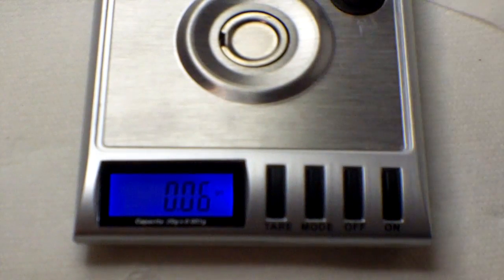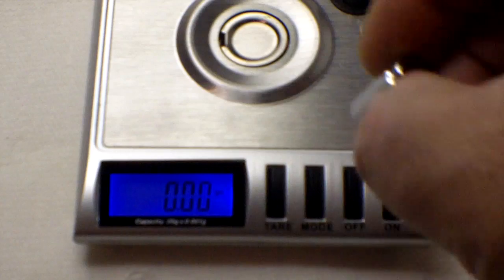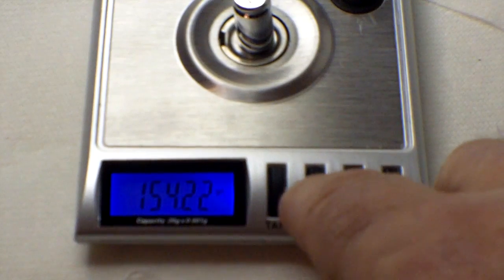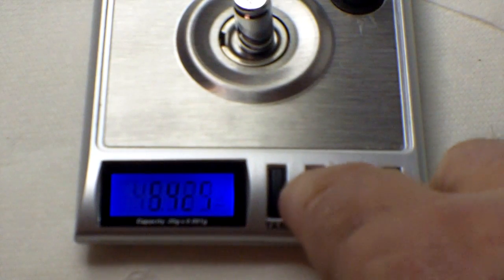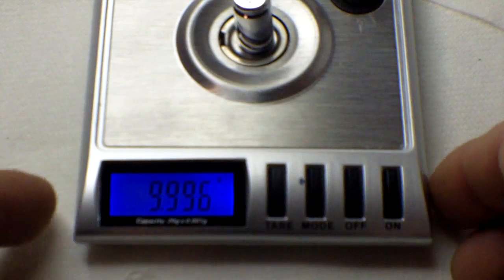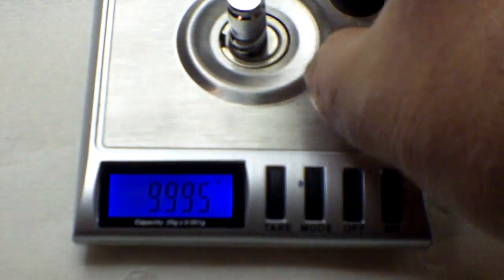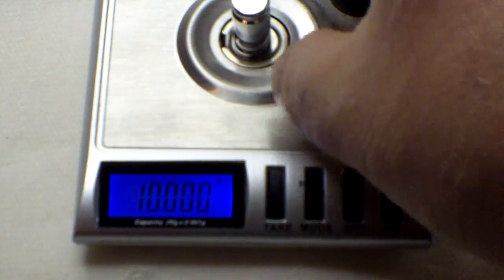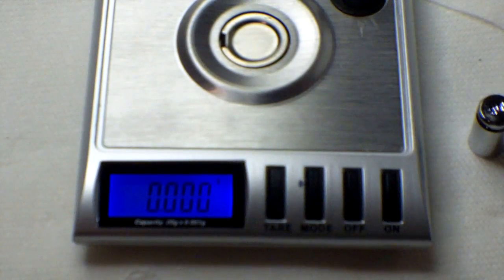Put this one back. Okay, so now it should be ready to weigh something. If I take a 10 gram weight and put it on here, it'll weigh 154.2 grains. Or if we switch the mode, 9.996 grams. It's a little bit sensitive to where you place it on here. There it says 10, so there is some variability in the measurement, not much. So that's how it works.